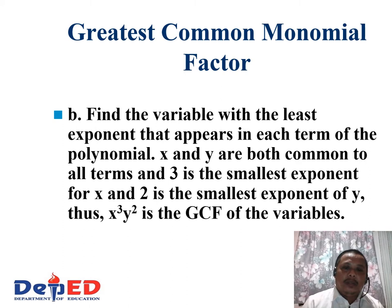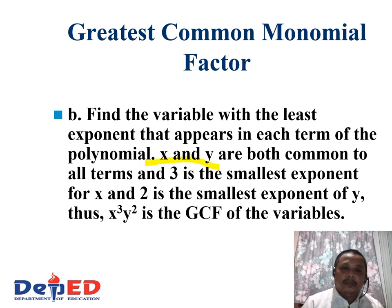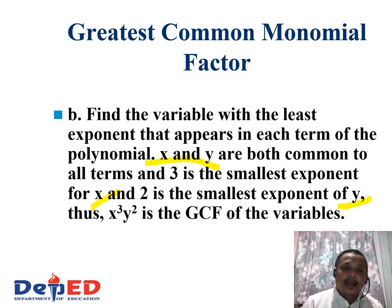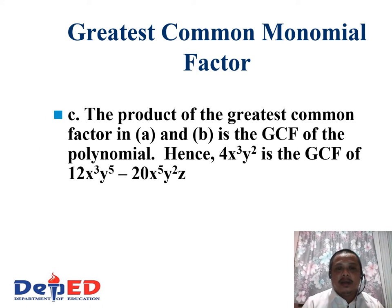Next, find the variable with the least exponent that appears in each term of the polynomial. X and y are both common to all terms; 3 is the smallest exponent of x, and 2 is the smallest exponent of y. Thus, x cubed and y squared is the GCF of the variables. The product of the greatest common factor of the coefficients and the variables is the GCF of the polynomial.